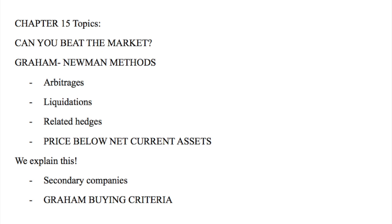Graham's methods — the Graham-Newman methods they used for 30 years — included arbitrage: buying one security and selling the other that has offered to buy the first one. So when there is an acquisition, you buy the company that will be bought at a premium and sell the other, which would give you a risk-free return.